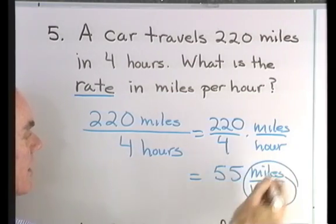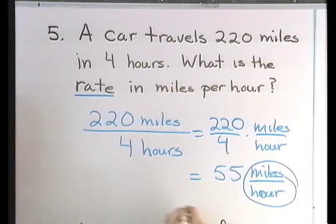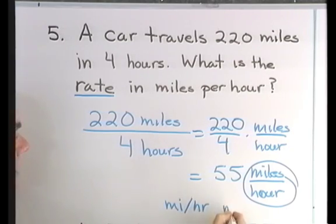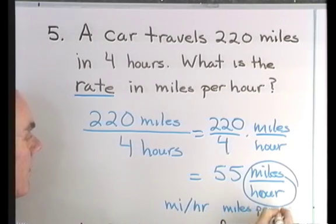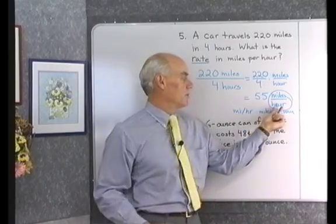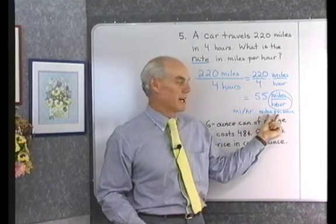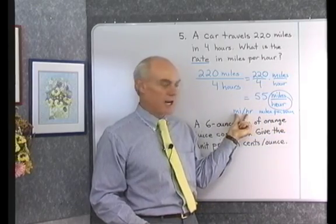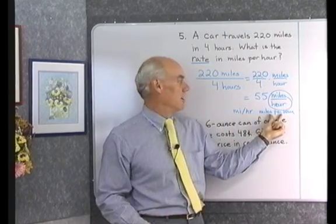Now I can write these units a lot of different ways. Let's abbreviate: miles over hours, just like I have right here. Or miles per hour with a slash. Or I can write out miles per hour. All three of these ways to write the units are exactly the same: miles over hours, miles slash hours, or miles per hour.